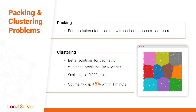Another class of problems on which Local Solver's performance has improved is packing and clustering. For packing, version 10.0 provides better solutions on instances with non-homogeneous containers. This is particularly useful for industrial versions of classical problems such as the bin packing or facility location problems. Additionally, Local Solver now yields better results on large instances of geometric clustering problems often encountered in data science. For example, our results on a classical k-means benchmark are within 5% of the optimal solutions in 60 seconds and easily scale up to 10,000 points.